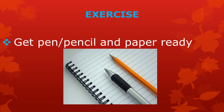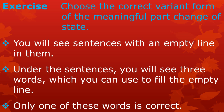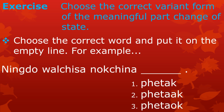Let's do an exercise to see what you have remembered. Please get a pen or pencil and a piece of paper ready. Choose the correct variant form of the meaningful part 'change of state.' You will see sentences with an empty line; under the sentences you will see three words to choose from to fill the empty line. Choose the correct word and put it on the empty line.